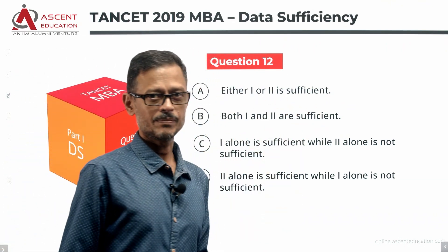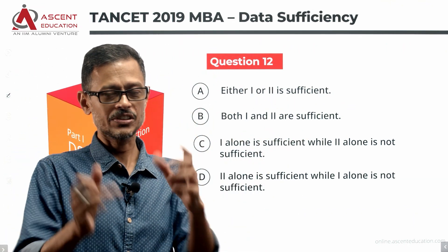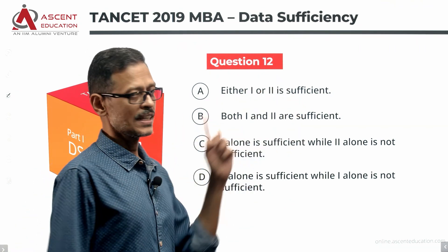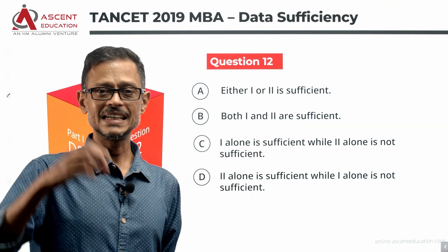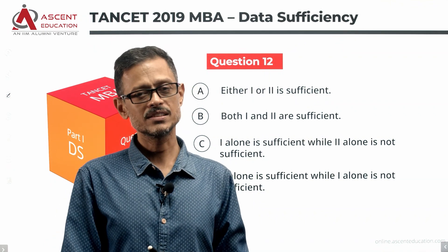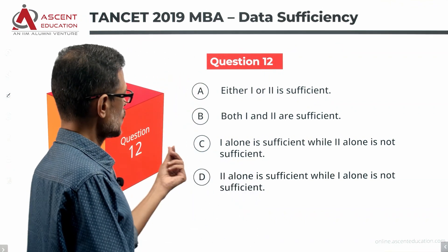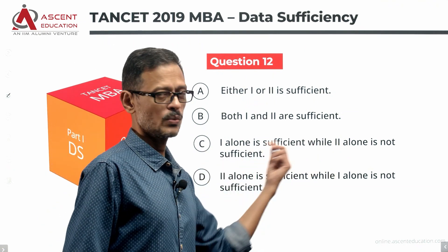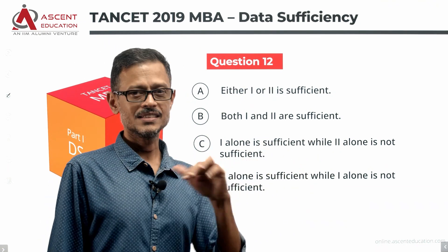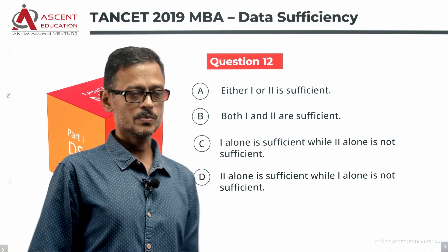Either one or two alone is sufficient — that's answer option A. If one alone is sufficient and two alone is sufficient independently, we go with A. If both one and two are required together to answer the question, the answer option is B. If one alone is sufficient while two is not, or two alone is sufficient while one is not, then the answer option is D.